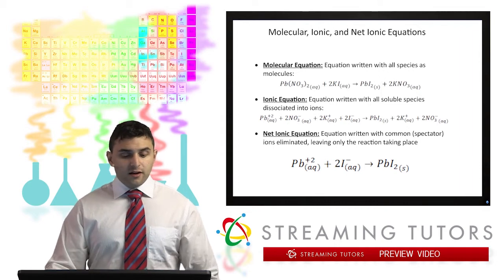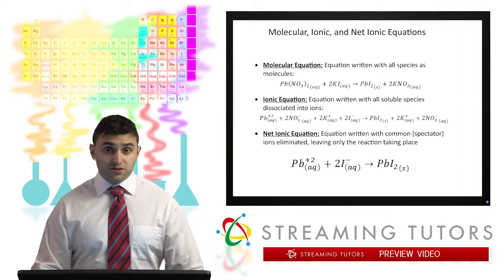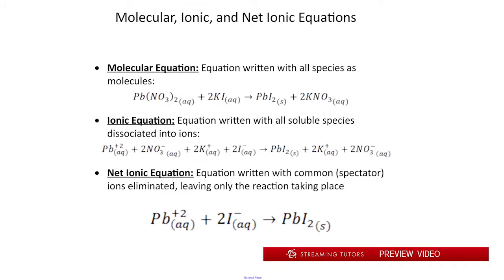On a related note, for any precipitation reaction, we can write out three equations. The first equation is known as our molecular equation. That just has everything as its chemical formula in solution, so we don't have anything dissociated in that first molecular equation. When we write out the ionic equation, we take all the species that are aqueous or dissolved in solution and we split them into our ions. For example, from Pb(NO3)2, we get Pb+2 and 2 nitrate ions. From KI, we get 2 potassiums and 2 iodide ions.